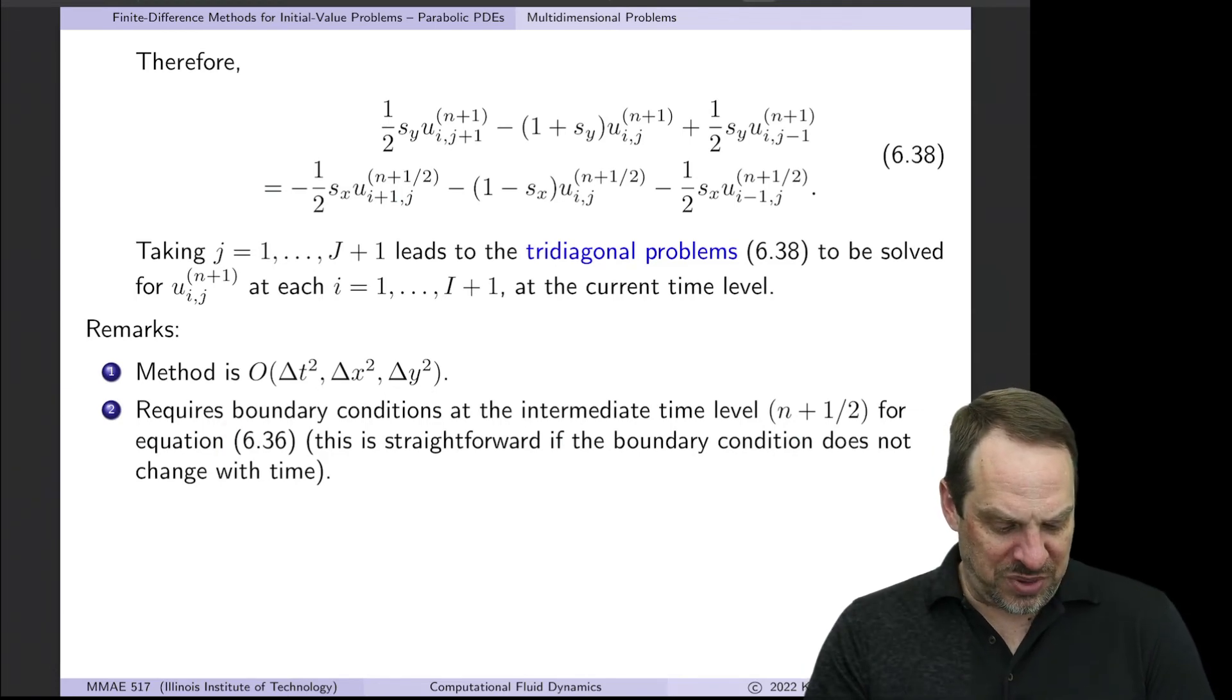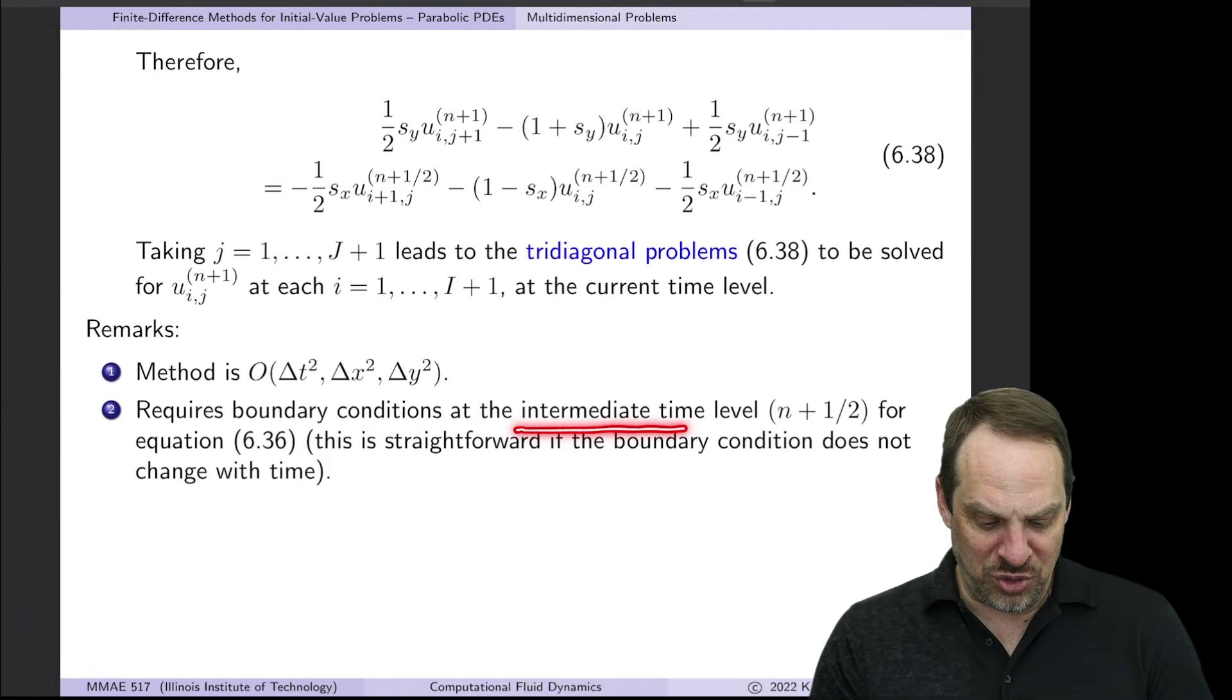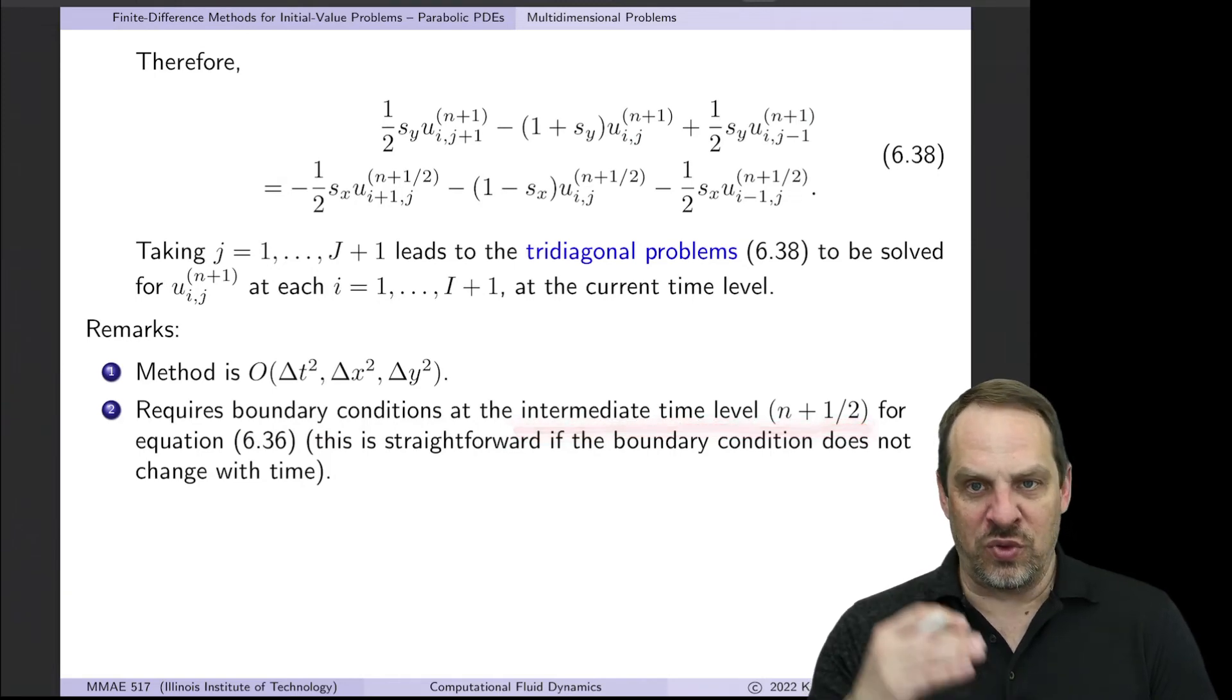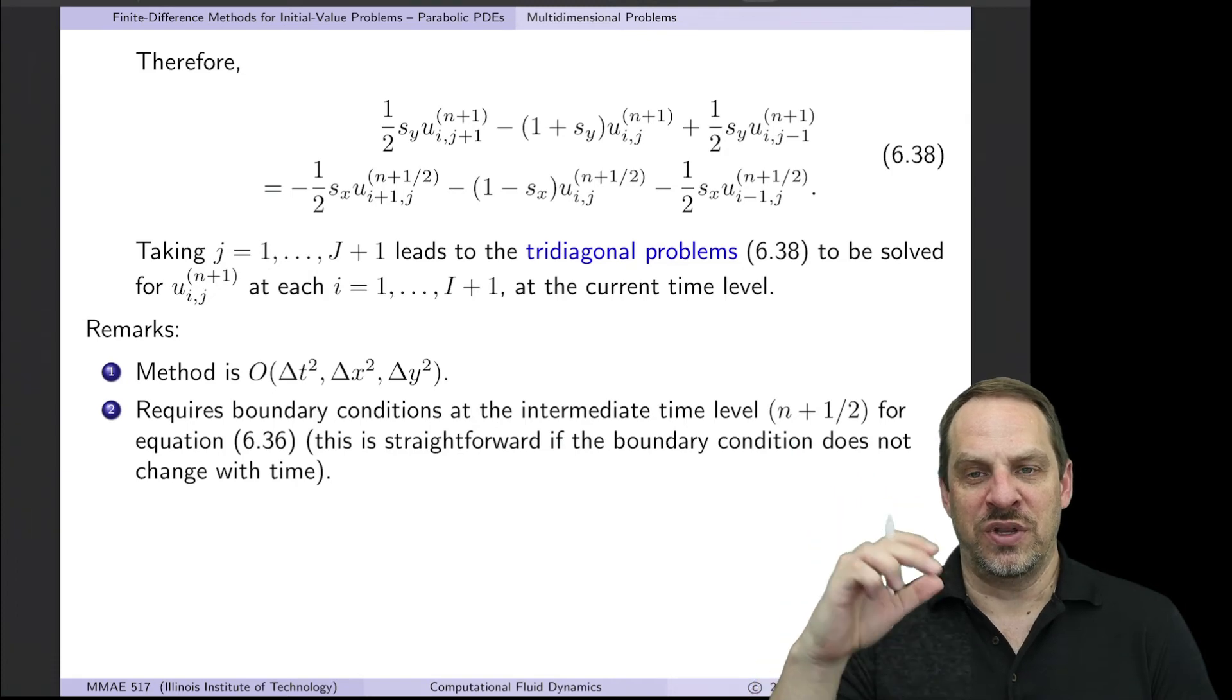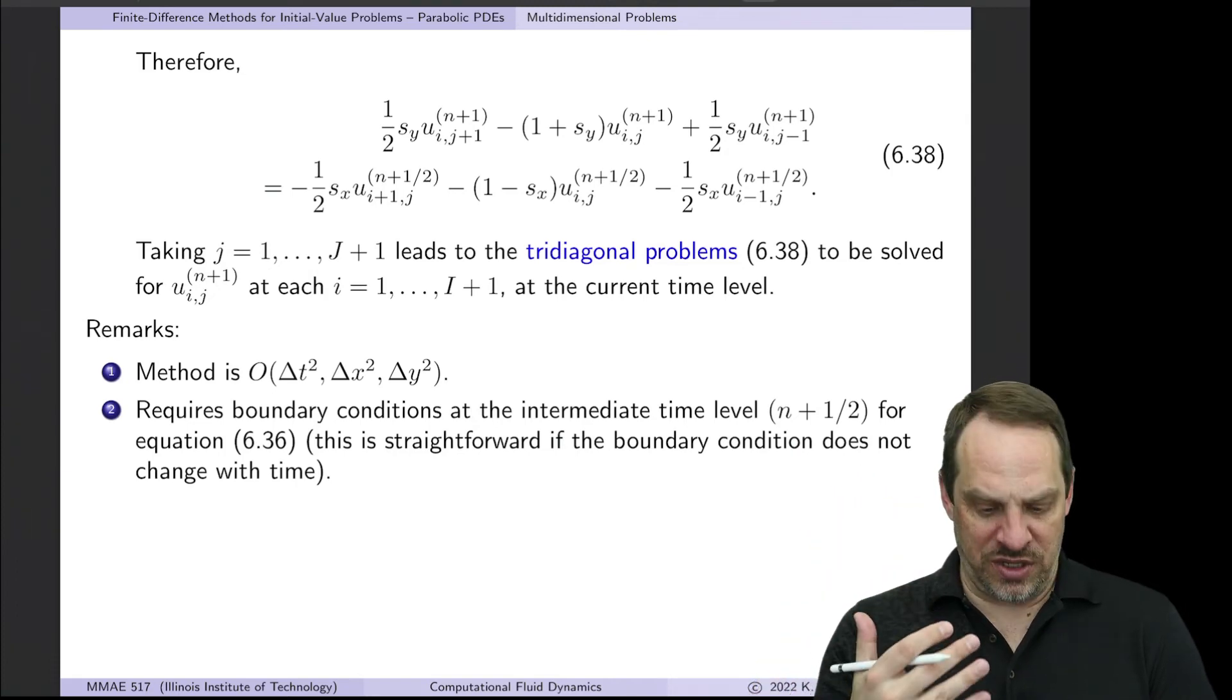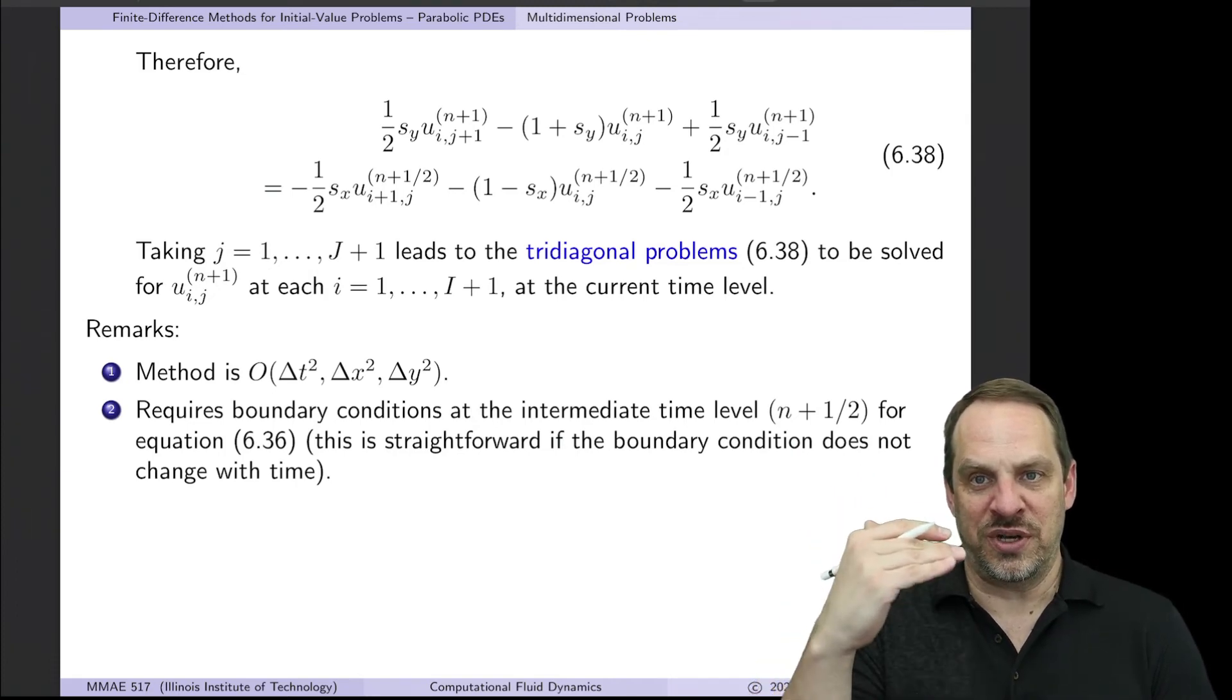Now in terms of applying boundary conditions, those would have to be applied at the intermediate time levels for that first step, for that first n, n plus a half. This can get a little tedious if the boundary conditions are changing with time.